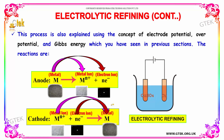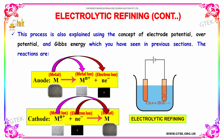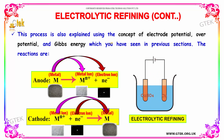At the anode, the metal becomes a metal ion and electrons are released. At the cathode, the metal ions collect electrons and deposit as pure metal. This is how the entire process of electrolytic refining works.